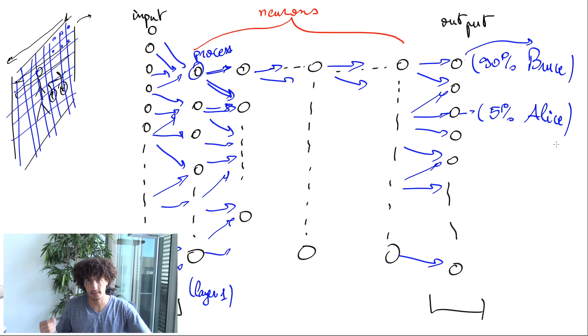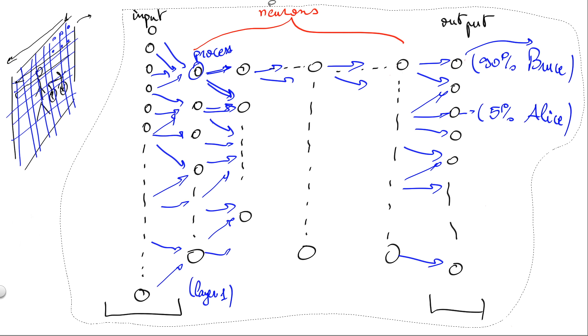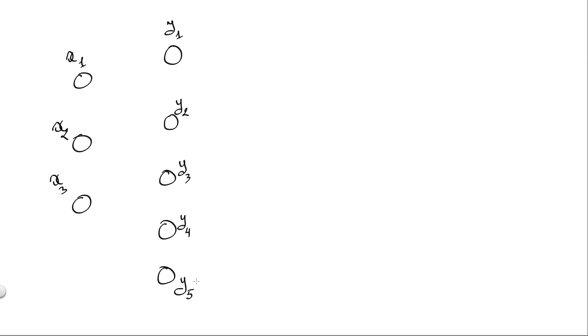Now the exact computation is as follows. To provide simple formulas to start with, I will describe a very simple neural network where you have a set of inputs x1, x2, x3, then a hidden layer containing 5 neurons y1, y2, y3 until y5, and at the end two output neurons o1 and o2.